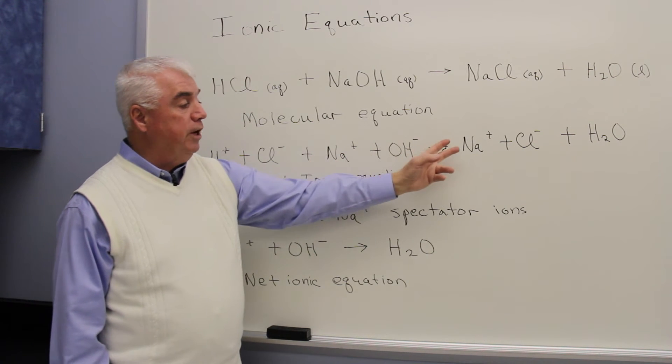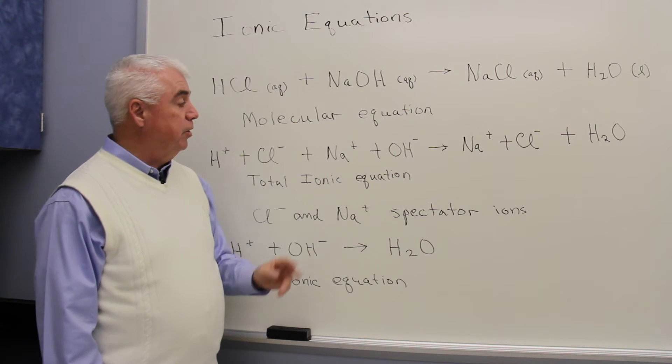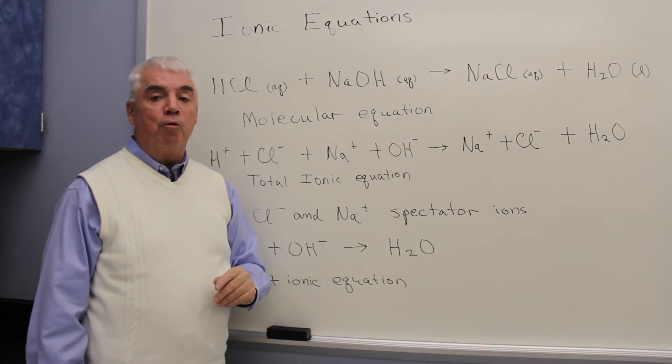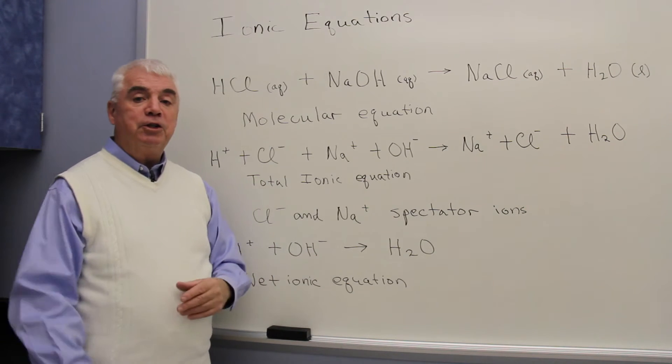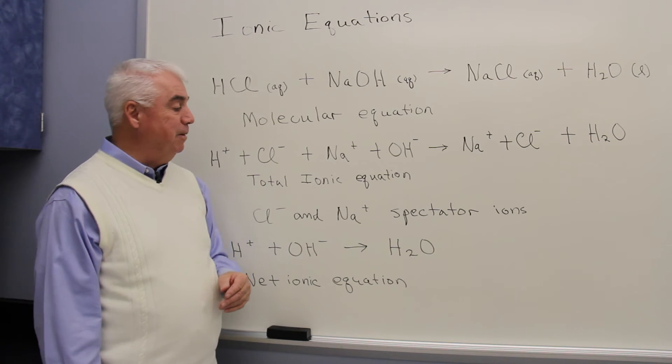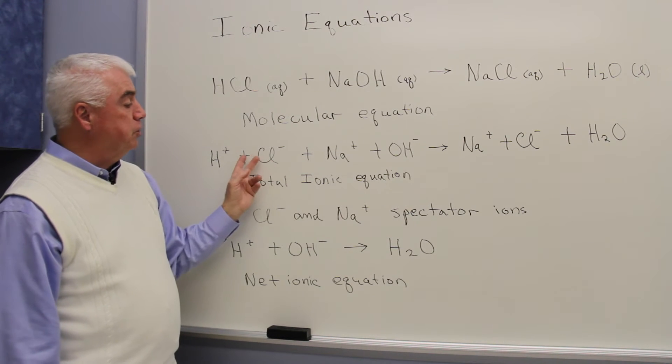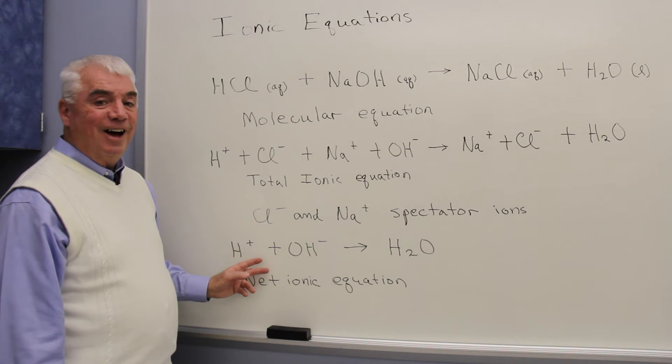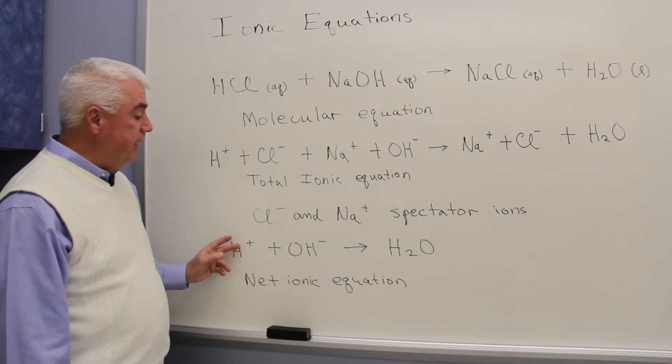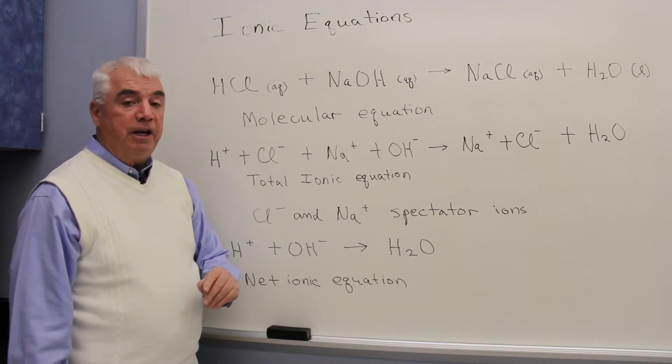The same is true of sodium ion. Well, these are called spectator ions. They're written in exactly the same form on the left and on the right. They're really just sort of watching the reaction take place. When we subtract out the spectator ions from the total ionic equation, we're left with the net ionic equation. In this case, H⁺ plus OH⁻ to give H₂O.